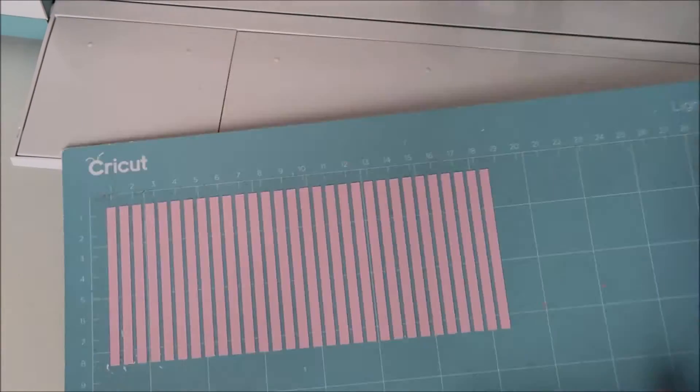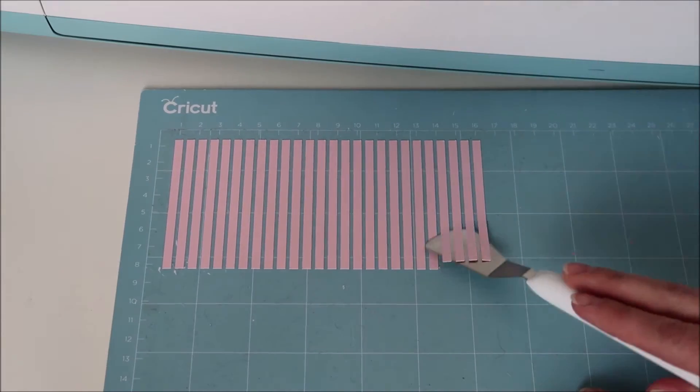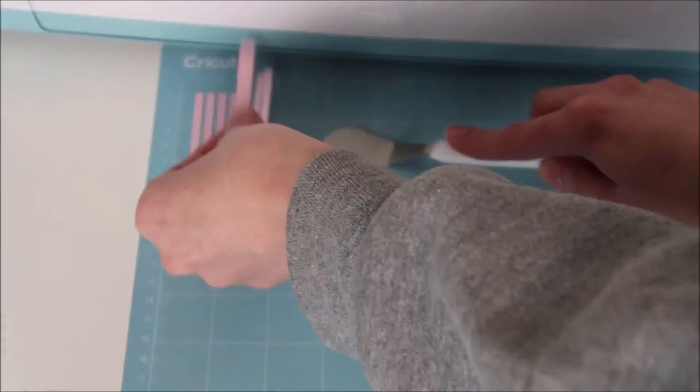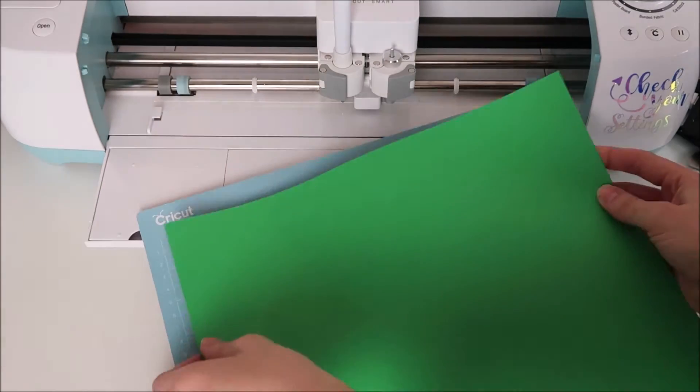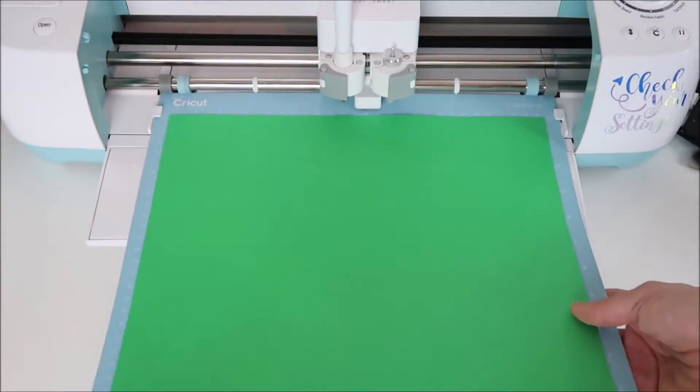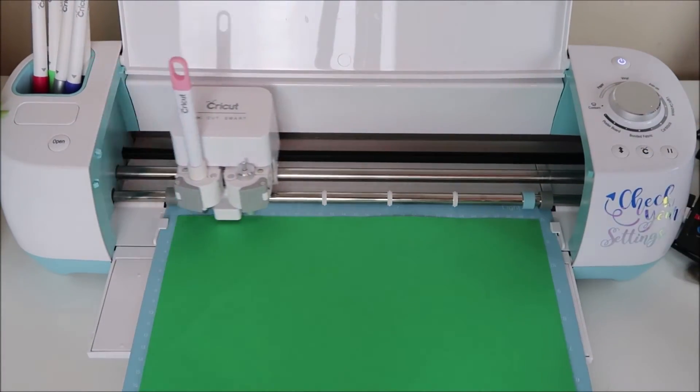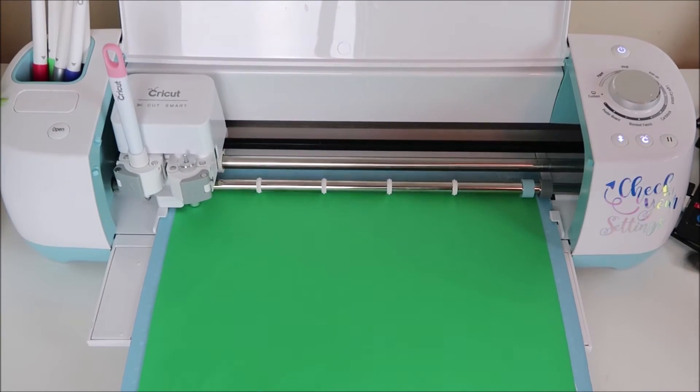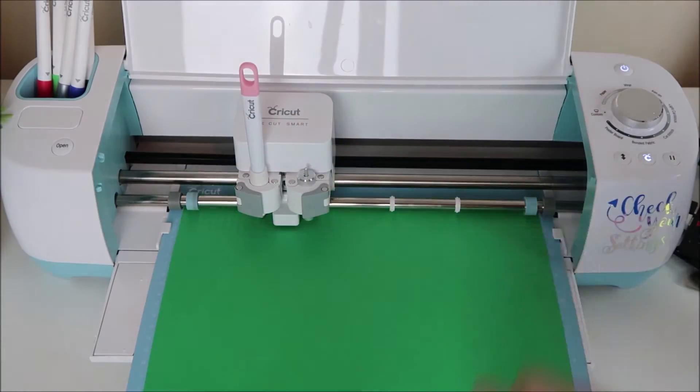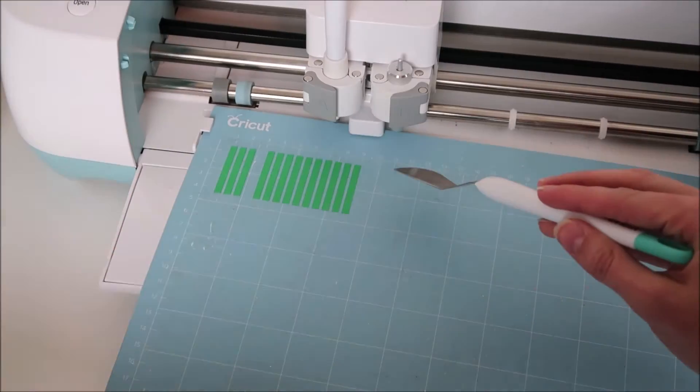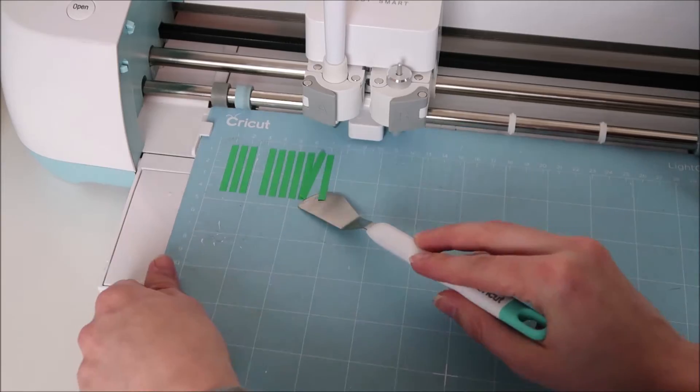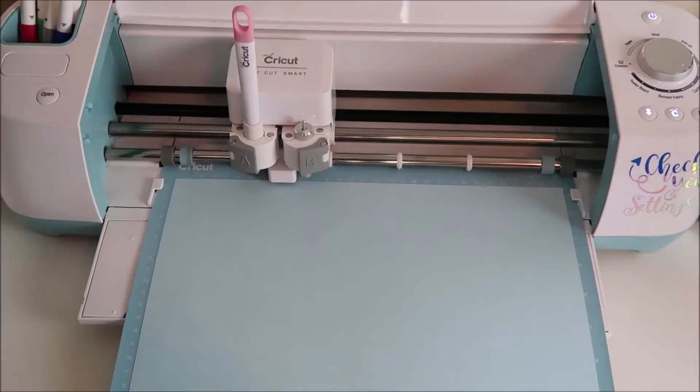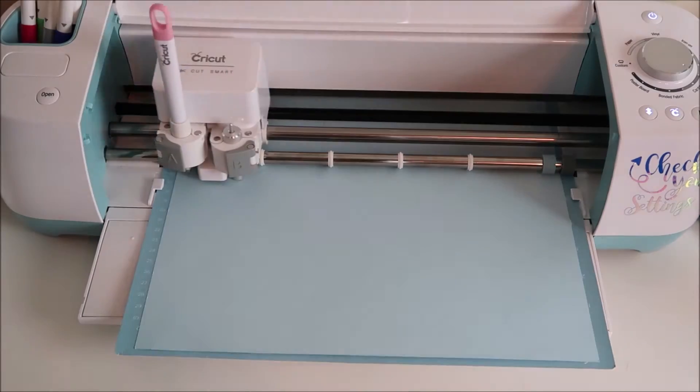The next mat I will cut out the pink petals. I like using the spatula tool to easily get the cardstock off of my mat. Next it will cut out the green leaves.